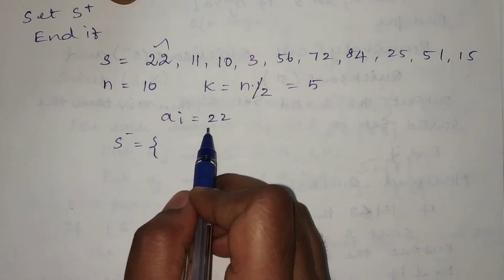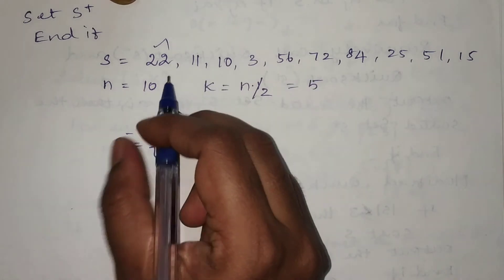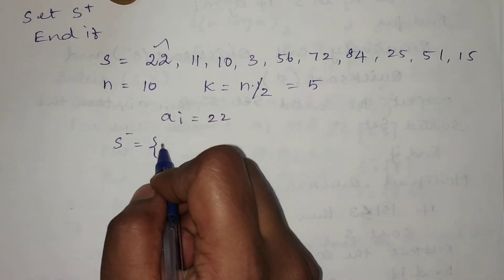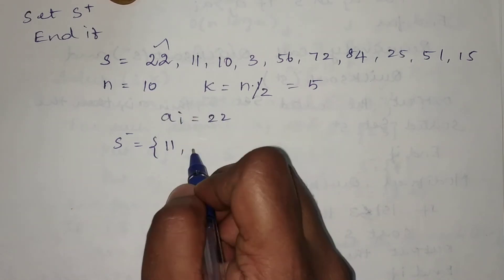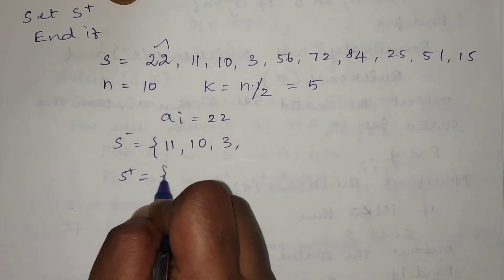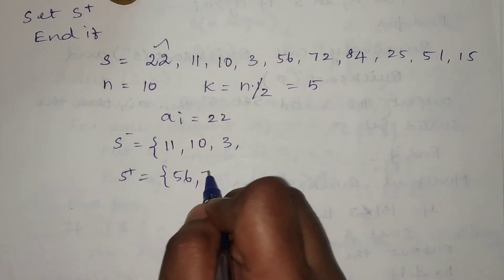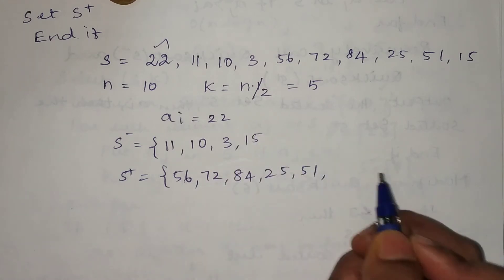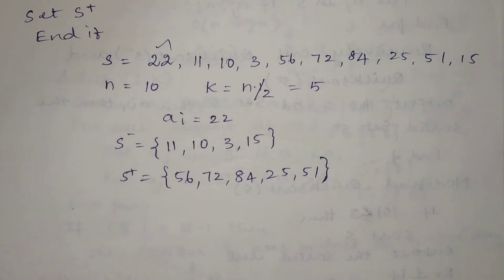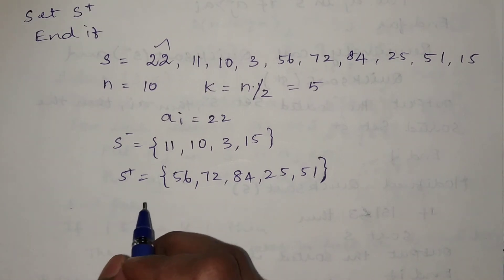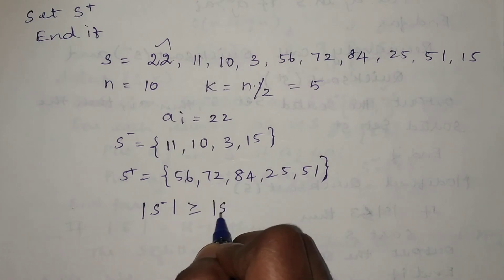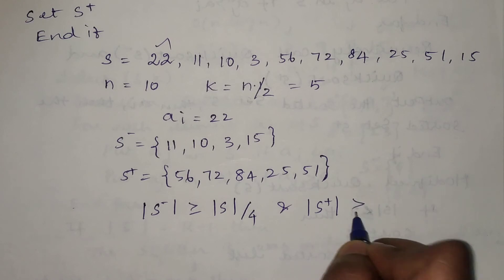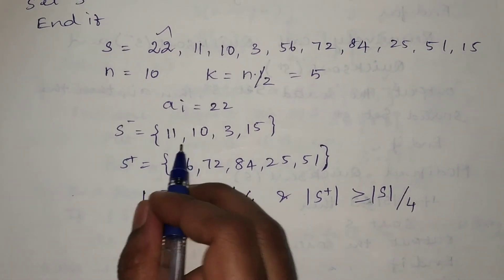We compare all remaining elements with the pivot 22. Elements lesser than 22 go into S⁻: 11, 10, 3, and 15. Elements greater than 22 go into S⁺: 56, 72, 84, 25, and 51. We have divided the input list into two groups. Now we check whether ai = 22 is a good splitter using the central splitter condition.